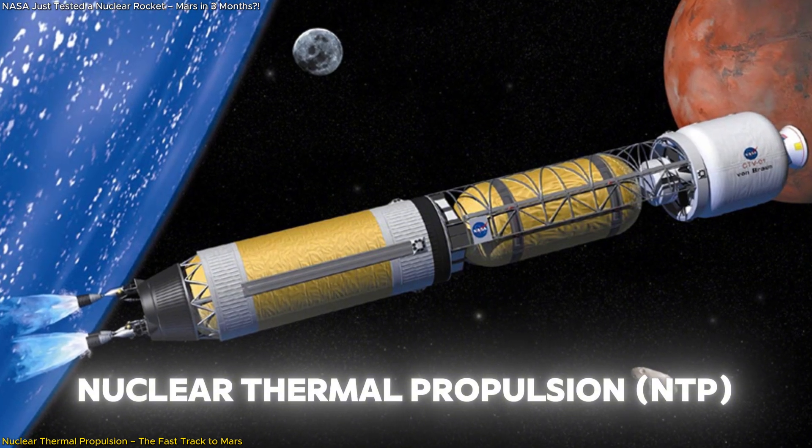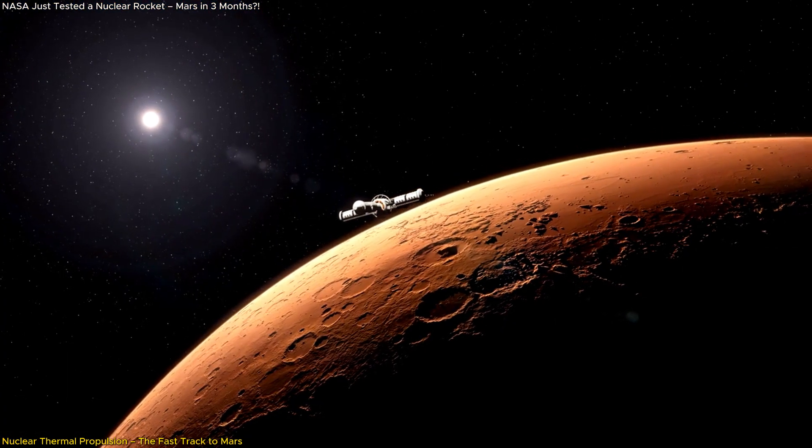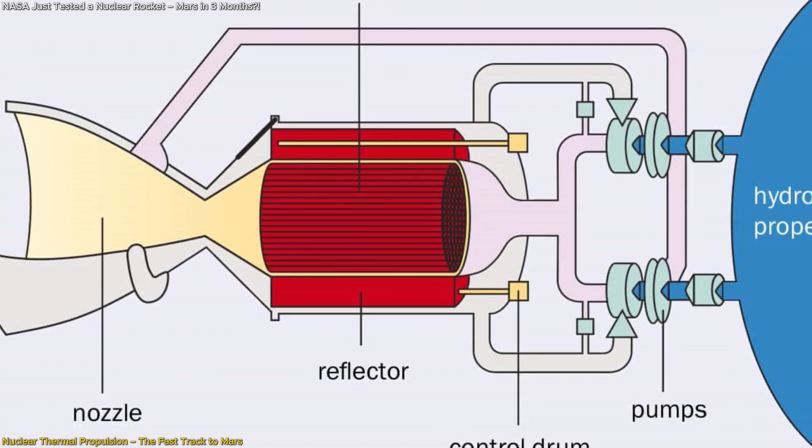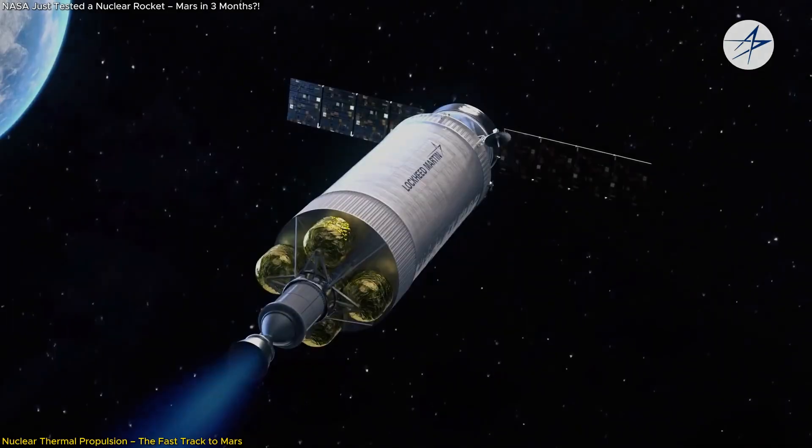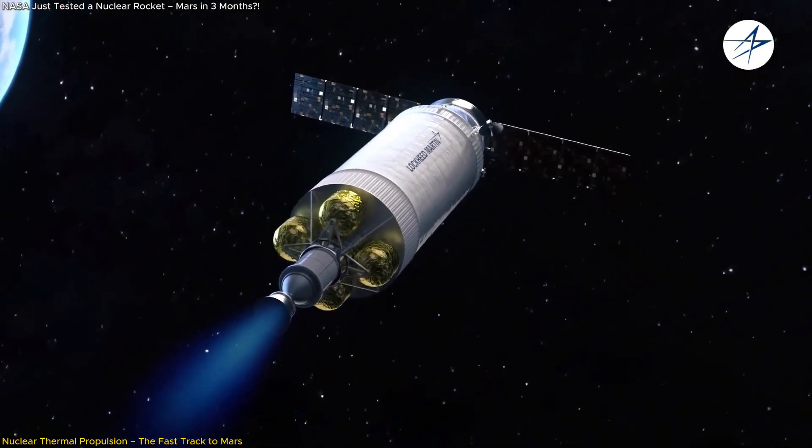Nuclear Thermal Propulsion (NTP) could be the solution, potentially reducing this travel time by up to 50%. Instead of relying on chemical combustion, NTP uses a nuclear reactor to superheat hydrogen, turning it into an ultra-fast propellant that produces much higher thrust than conventional engines.